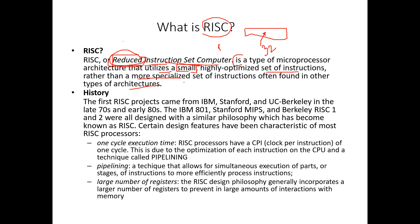The history of RISC: the first RISC projects came from IBM, Stanford, and UC Berkeley in the late 1970s and early 1980s. IBM's 801, Stanford MIPS, and Berkeley RISC-I and RISC-II were designed with a similar philosophy, which has become known as RISC.